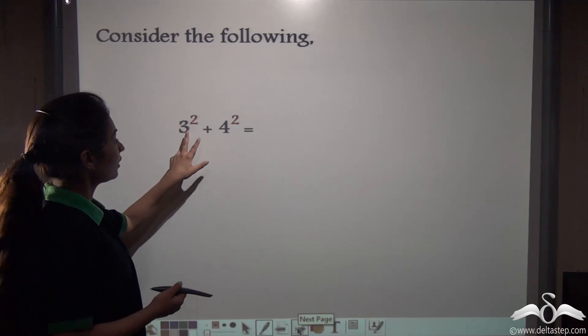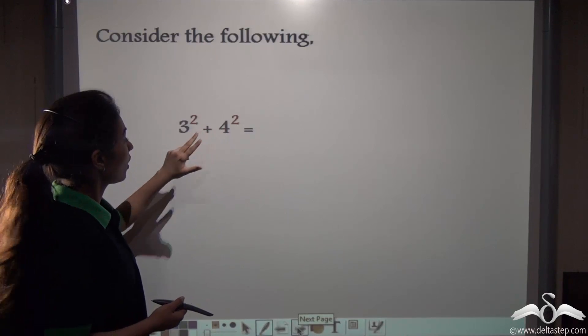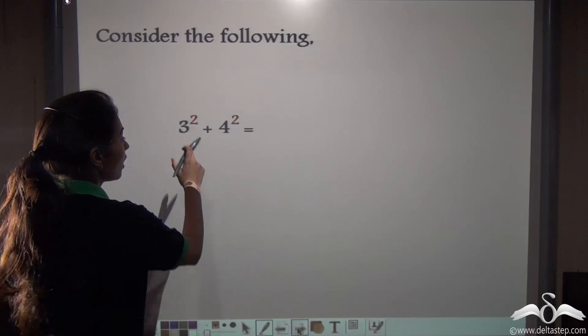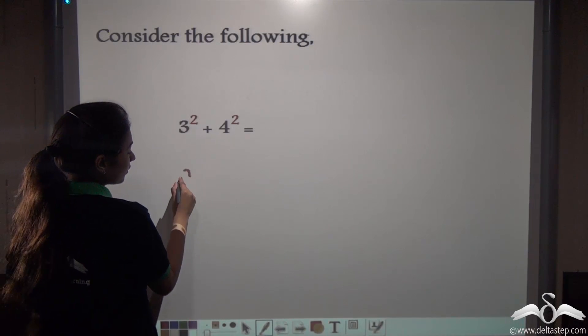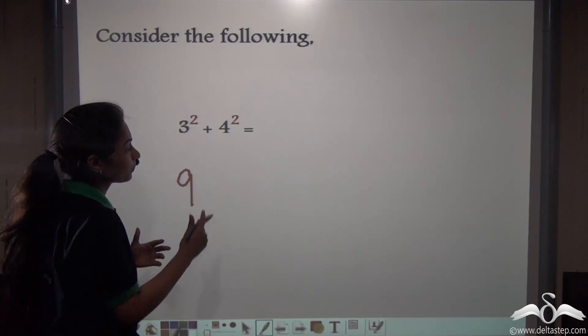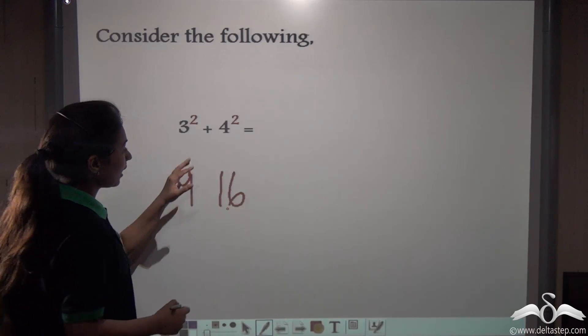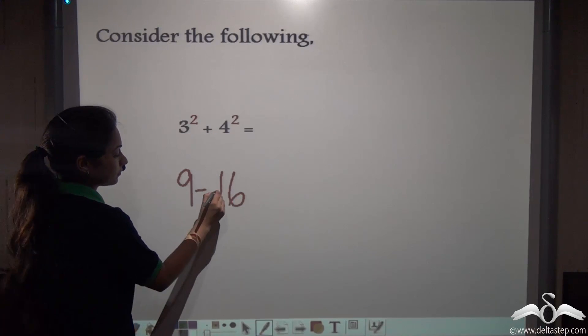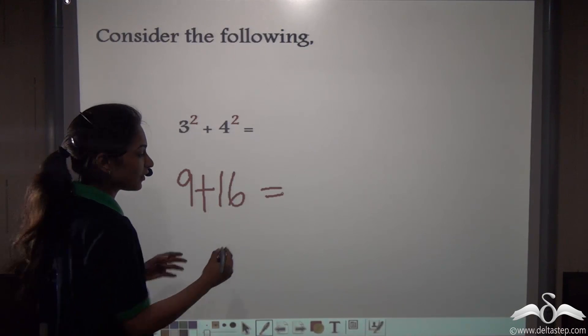Consider these numbers: 3 and 4. Let us square them. You can see that 3 and 4 are consecutive and both are positive. Now let us square these numbers. What do you get? 3 squared is 9, 3 into 3. 4 squared is 4 into 4, which is 16. And let us add these numbers. What will you get? 9 plus 16 gives us 25.